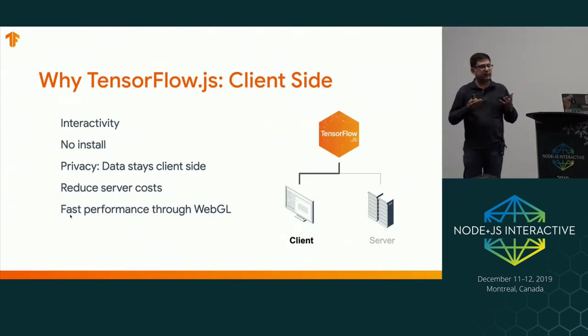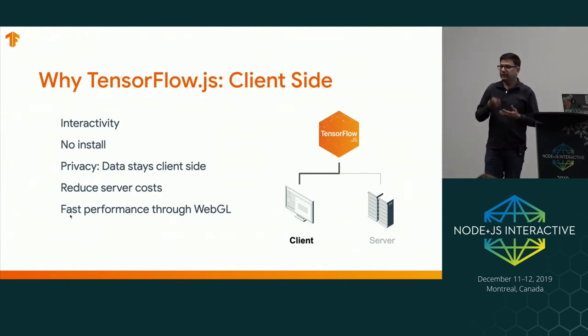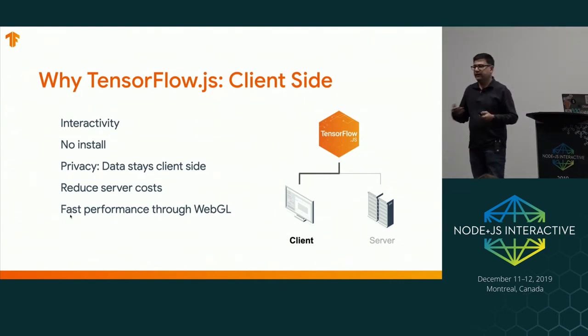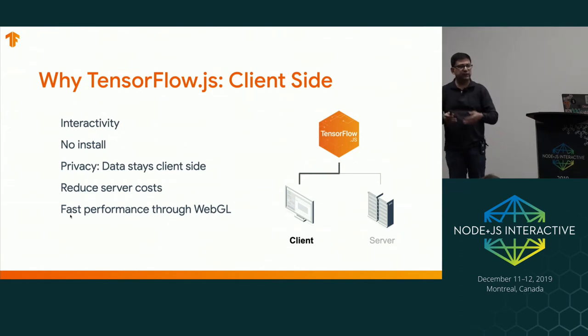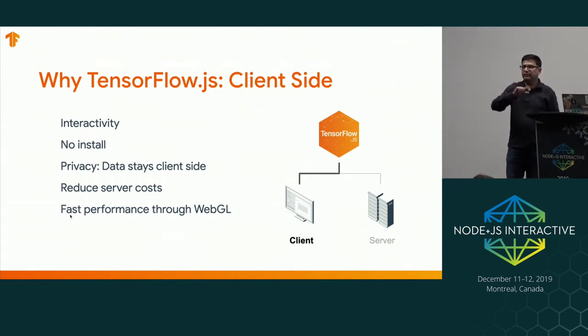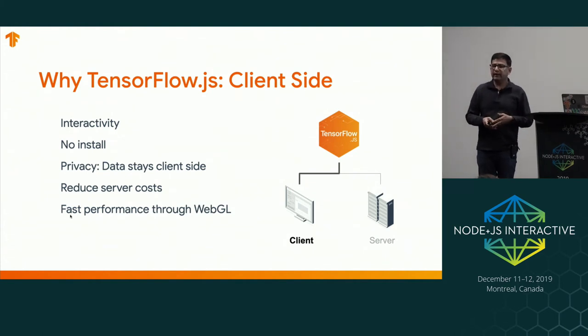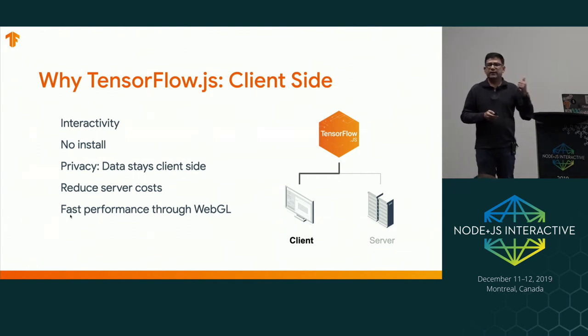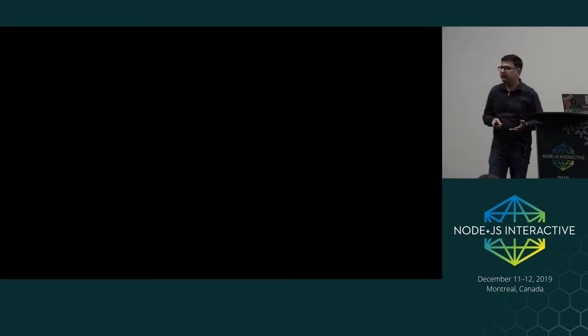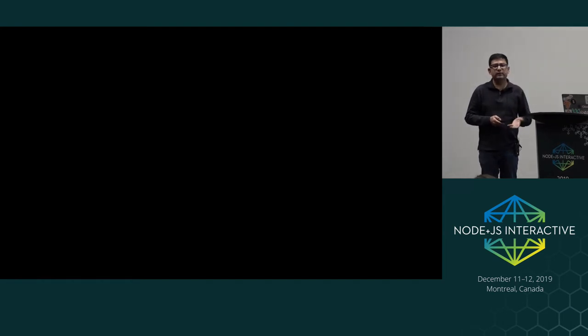Why is running ML in the browser a good idea? On the client side there are many advantages. The browser gives you a lot of interactivity and easy access to sensors like webcam and microphone, so you can immediately feed sensor data into your model — for example, images from a live webcam stream. There's nothing to install; you just share a URL link and users have a web page with the model in it. It has huge privacy implications: because you're running models locally client side, no data goes to the server. This is enormously important for healthcare and other privacy-sensitive applications. It also reduces server-side costs.